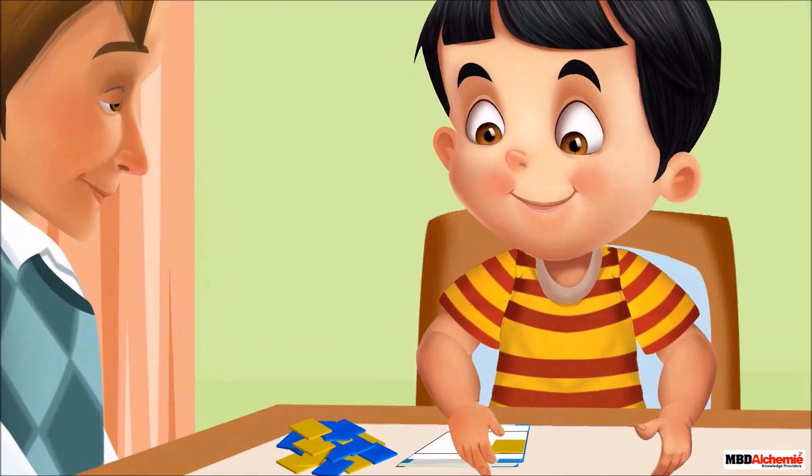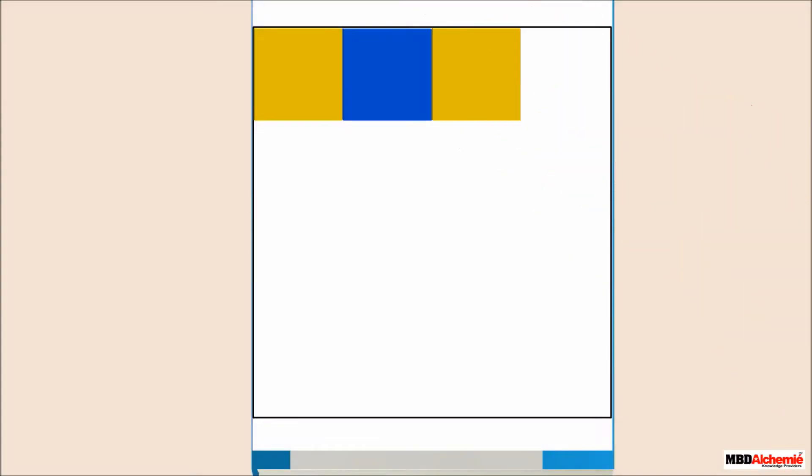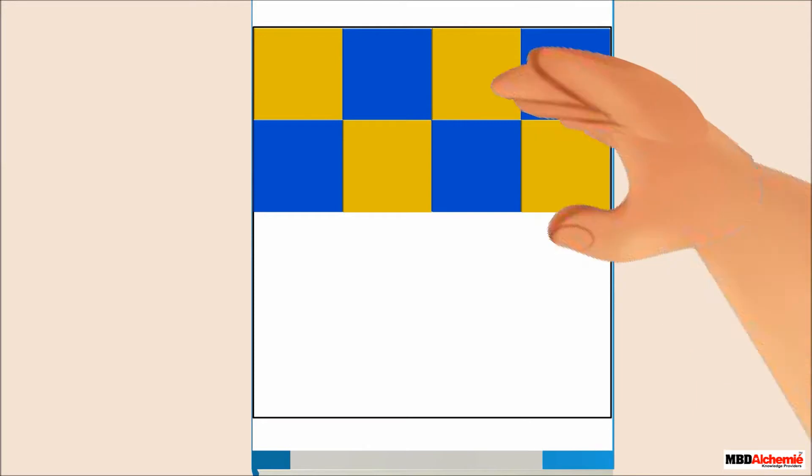Sid is covering the square drawn on a sheet of paper with square counters to find out the area of the square. He puts all the square counters one by one inside the square.